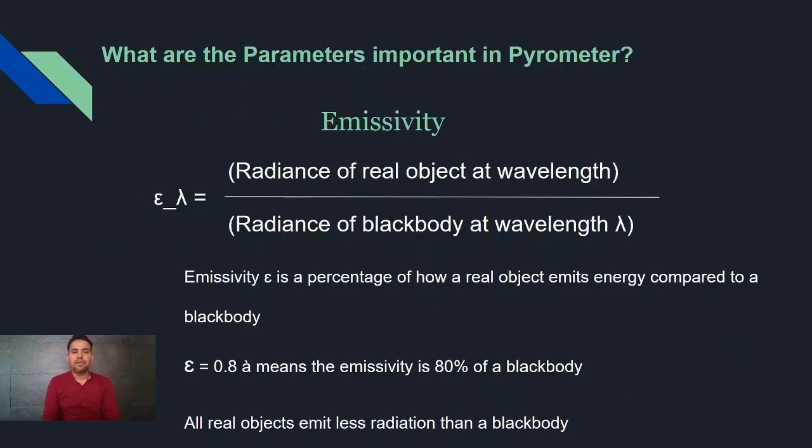What are the different parameters important in pyrometer? Emissivity is one of the important parameters in pyrometer selection. Emissivity is measured to the object's ability to emit infrared energies and it has a value from 0 to 1. It also defined as the radiation of the real object with respect to the radiation of the black body, because the black body has a perfect emitter and it has a value of 1.